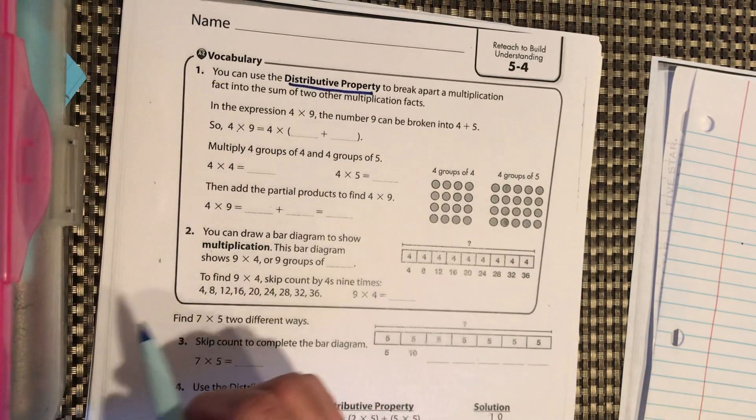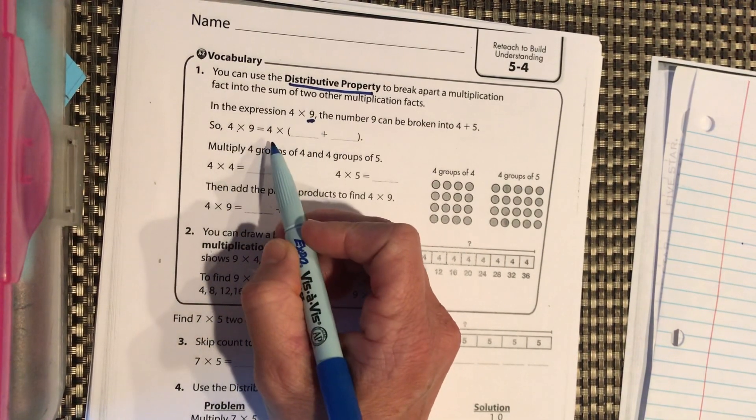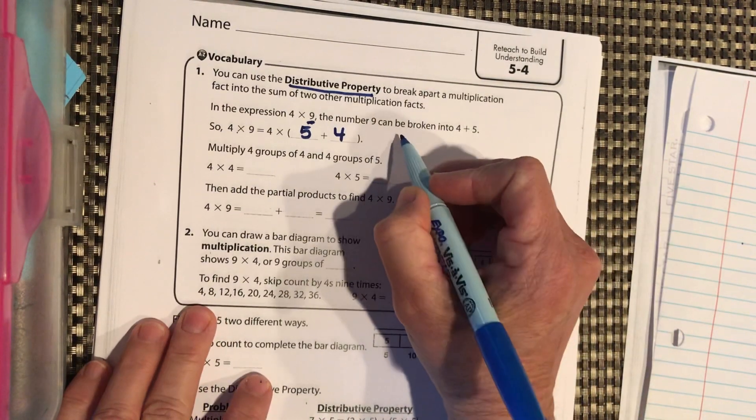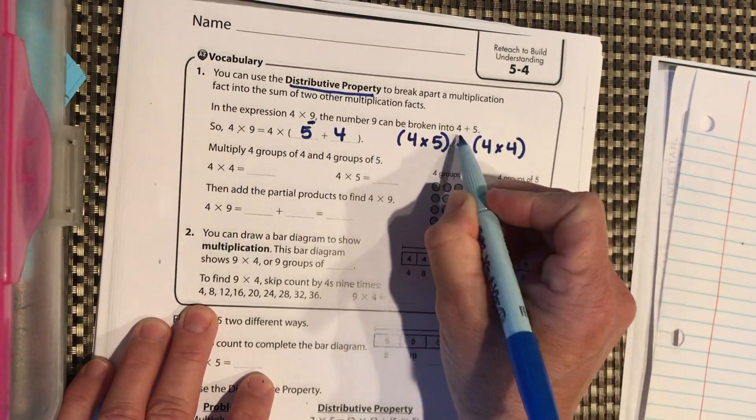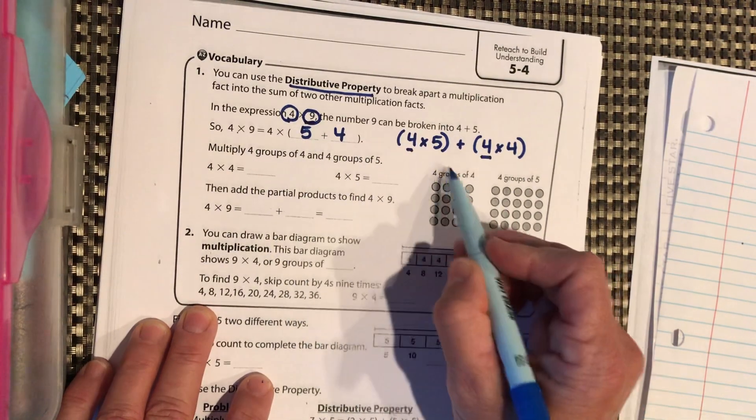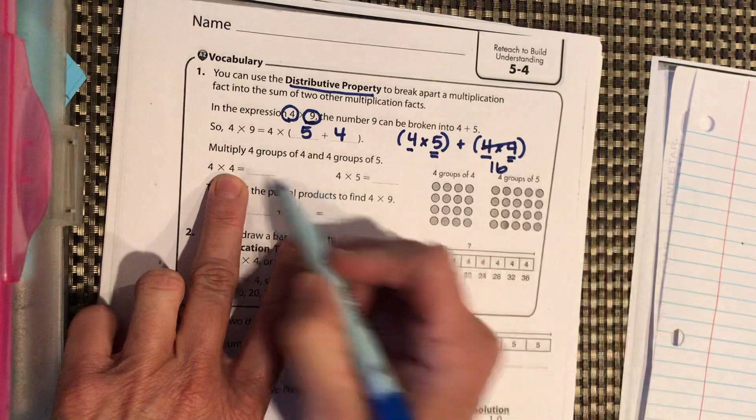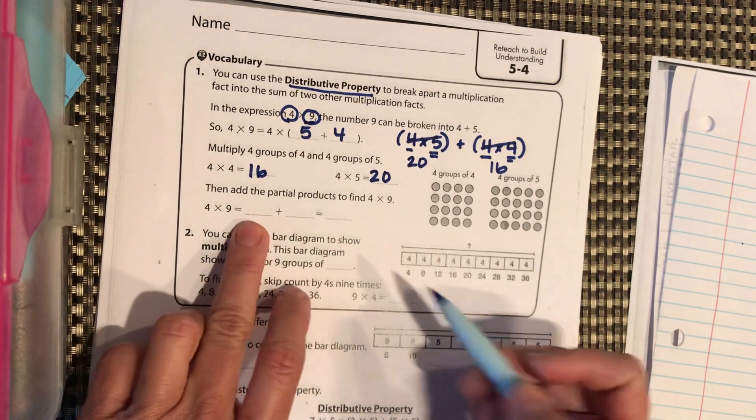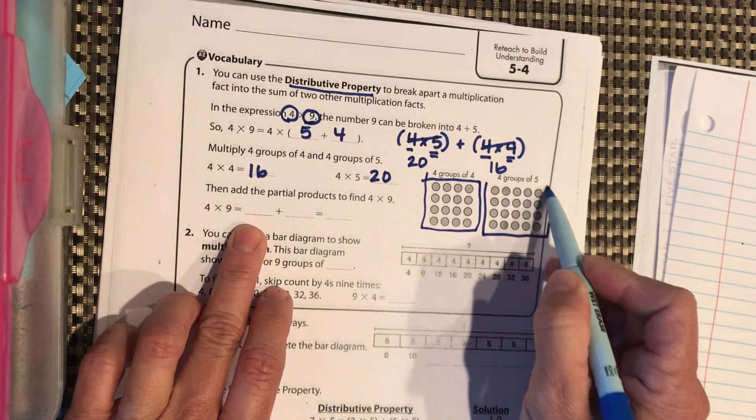So, we have the distributive property. We have 4 times 9. They want us to break down the 9, so the 4 is going to stay the same. So we're going to break this 9 into 5 and 4. And remember how we do that. We do 4 times 5 plus 4 times 4. So our 4 stayed the same, and then we broke down the 9 into 5 and 4, right? So 4 times 4 is 16, and 5 times 4 is 20. And then we're going to add, and here's our 4 groups of 4 and 4 groups of 5, just to show it to us.